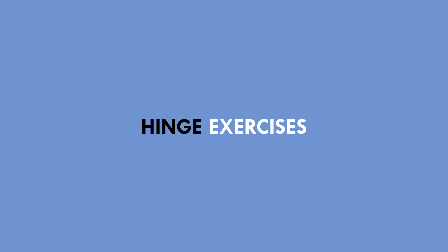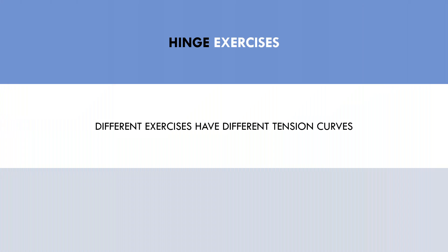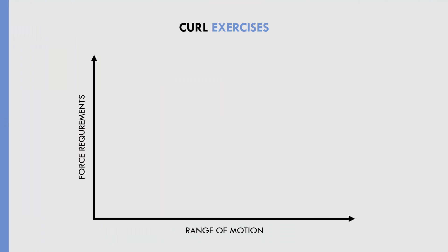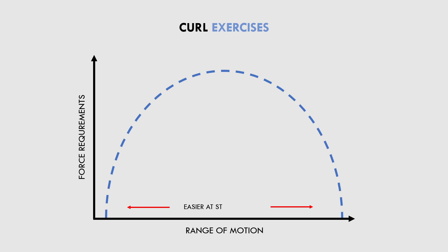Hinge exercises don't have a generalizable tension curve — different exercises will have different tension curves. When we compare a conventional deadlift, sumo deadlift, stiff leg deadlift, and hip thrust, the tension curves of these exercises are all different, so it is specific to the movement. Bicep curl variations generally have a bell-shaped tension curve like the squat, meaning the movement is easier at the start and end of the lift and harder during the mid-range. For example, a dumbbell curl is most difficult when the forearm is parallel with the ground.